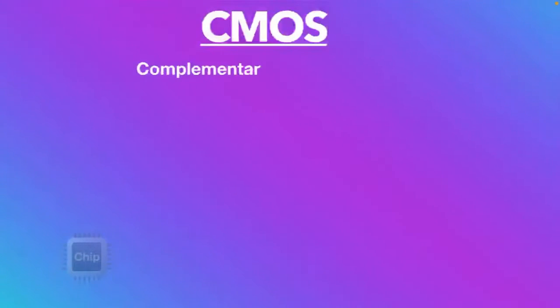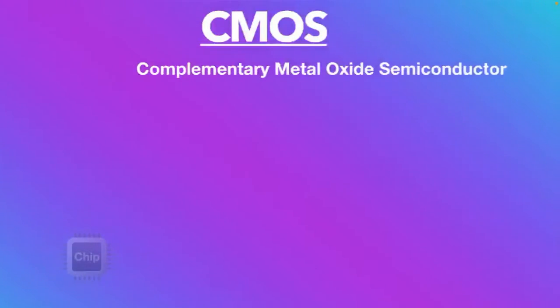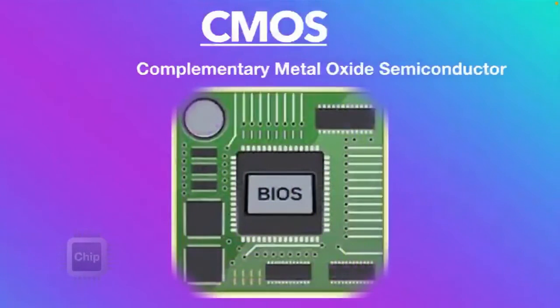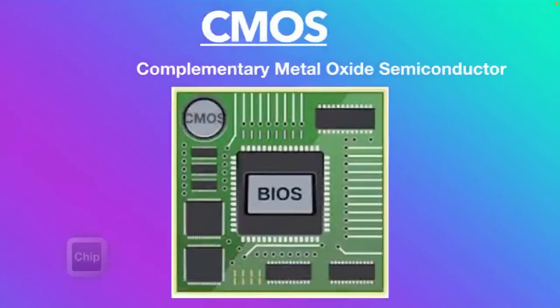Hello everyone. What is CMOS and what is it used for? This is what we are going to talk about today. CMOS stands for Complementary Metal Oxide Semiconductor. It is used to describe the small amount of memory on a computer's motherboard.